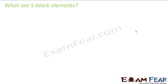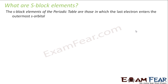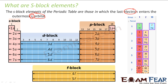So the first question that comes to our mind is: what are S-Block Elements? S-Block Elements are nothing but elements where the last electron enters the S orbital, and that's why the name comes — S-Block means the last electron is in S orbital. If you see, the S-Block has hydrogen, helium, lithium, beryllium, sodium, magnesium, potassium, calcium — all these are S-Block Elements.